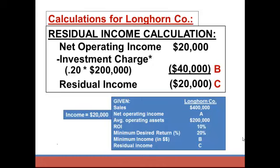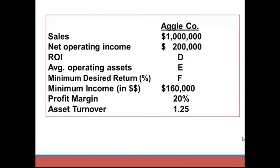That's letters A, B, and C for Longhorn Company. Now let's look at Aggie Company. Sales are $1,000,000, net operating income is $200,000, ROI is D, average operating assets is E, minimum desired return is F, minimum income is $160,000, profit margin is 20%, and asset turnover is 1.25.